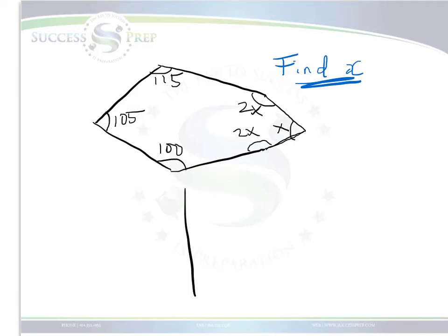For a question like this, the key idea is first of all figuring out the sum of all the interior angles in this particular shape. And the way you want to figure that out is determine how many sides you actually have, because that's going to be helpful to us.